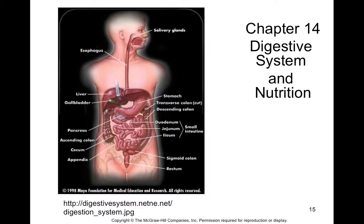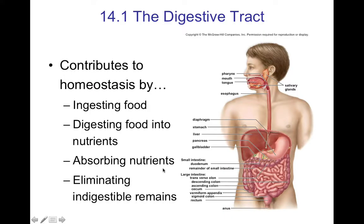Chapter 14 covers the digestive system. You'll want to be familiar with the primary structures and functions, including the mouth, salivary glands, esophagus, stomach, liver, pancreas, and the small intestine — comprising the duodenum, jejunum, and ileum. The large intestine involves the ascending colon, transverse colon, descending colon, cecum, sigmoid colon, and rectum. Main functions include ingesting and digesting food, absorbing nutrients into the bloodstream, and eliminating indigestible material.